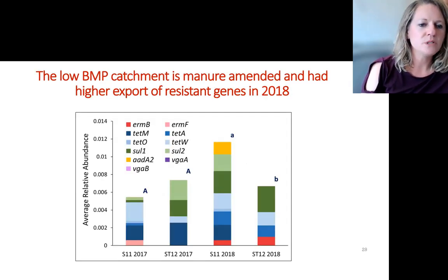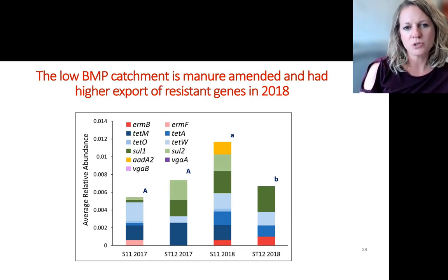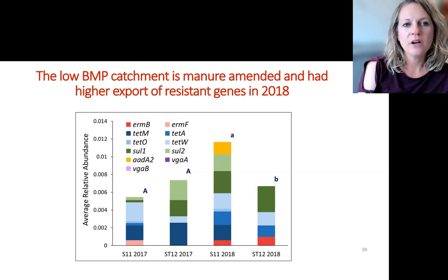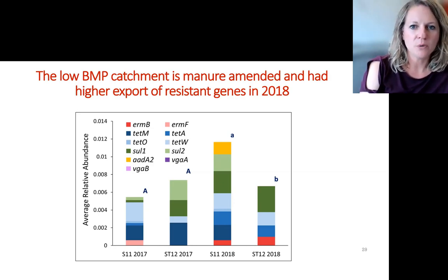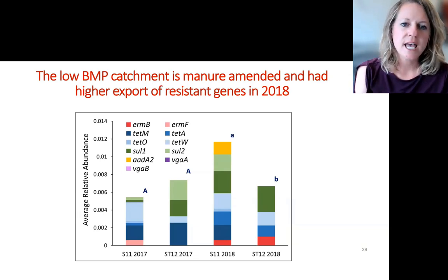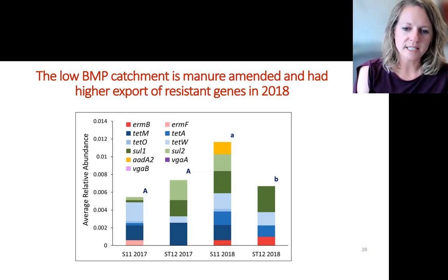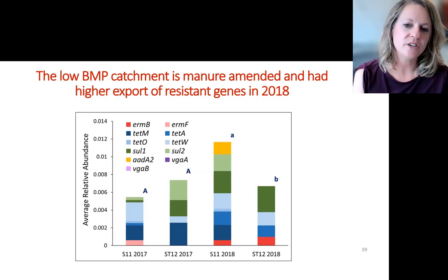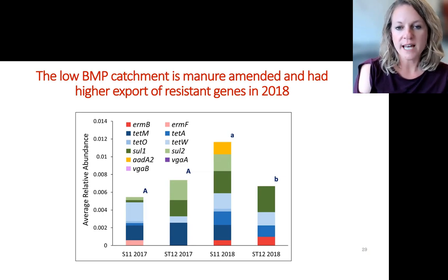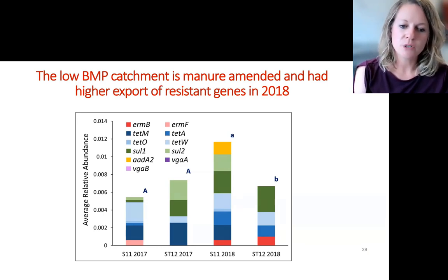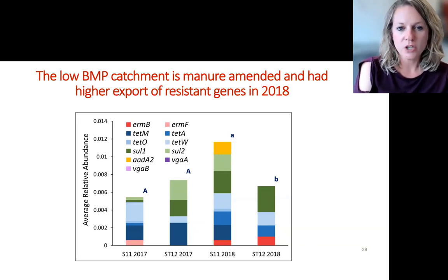Similar to the previous results, this stacked plot shows different resistant genes as relative abundance. The low BMP catchment received manure, and we saw higher export of resistant genes in 2018. Different colors represent different genes stacked on top of each other. Interestingly, we also see fairly significant amounts of resistant genes and indicators coming from watershed 12, which has high levels of BMPs and no known manure source. In some years — 2017 — there were no significant differences between the two sub-watersheds.